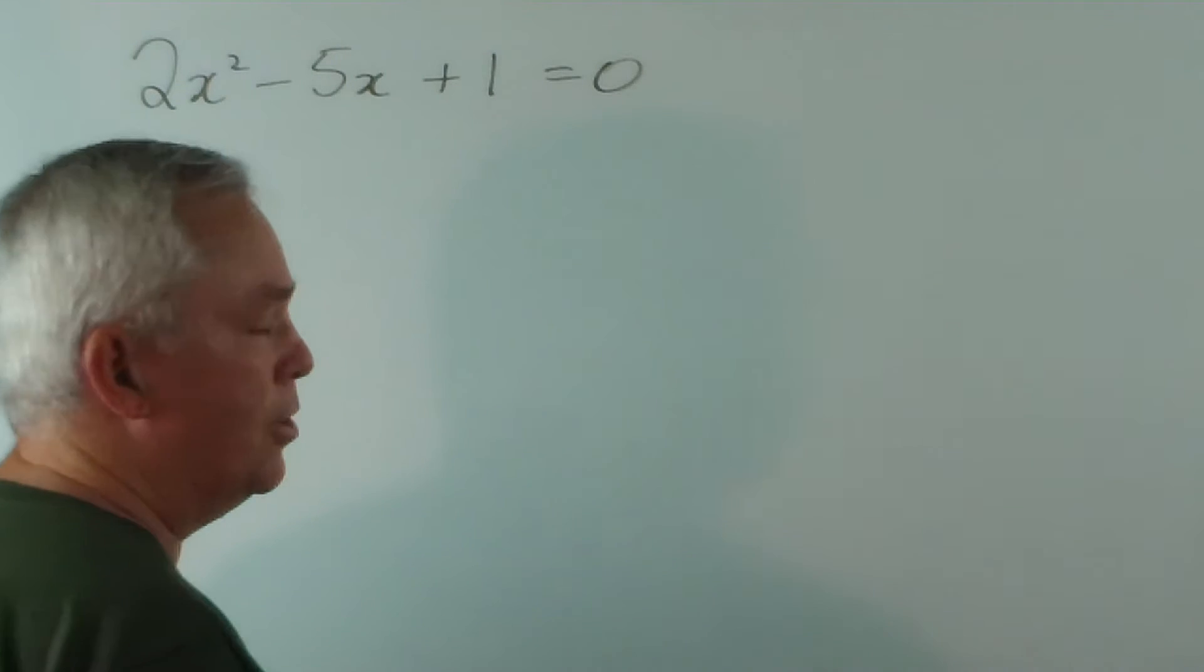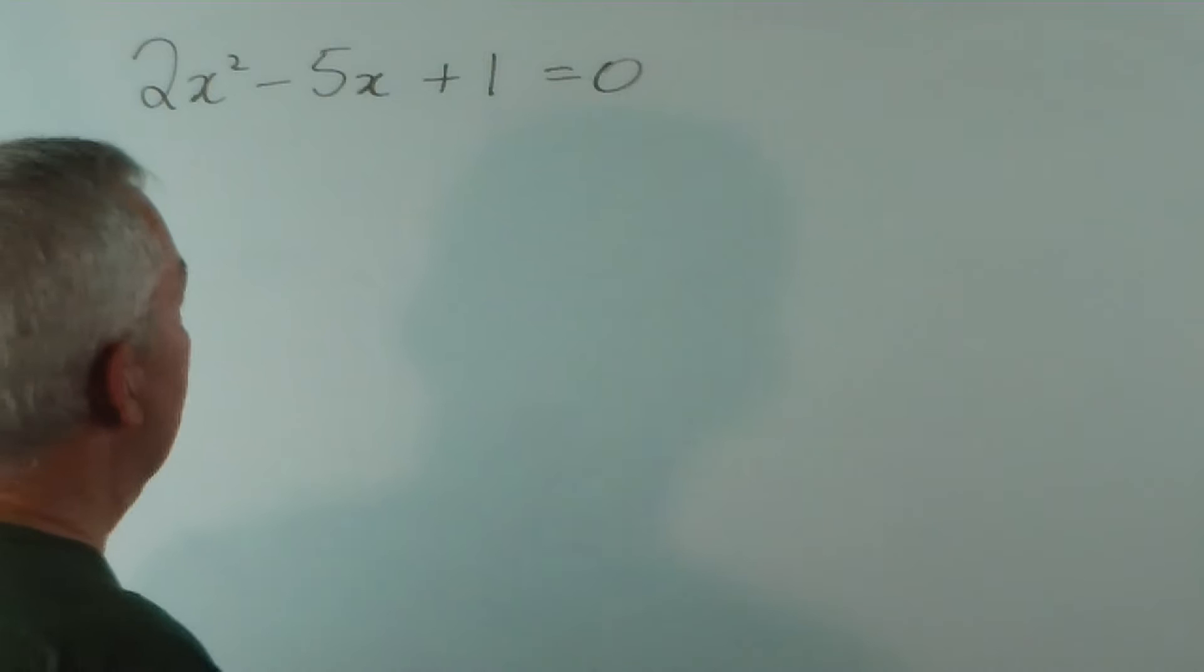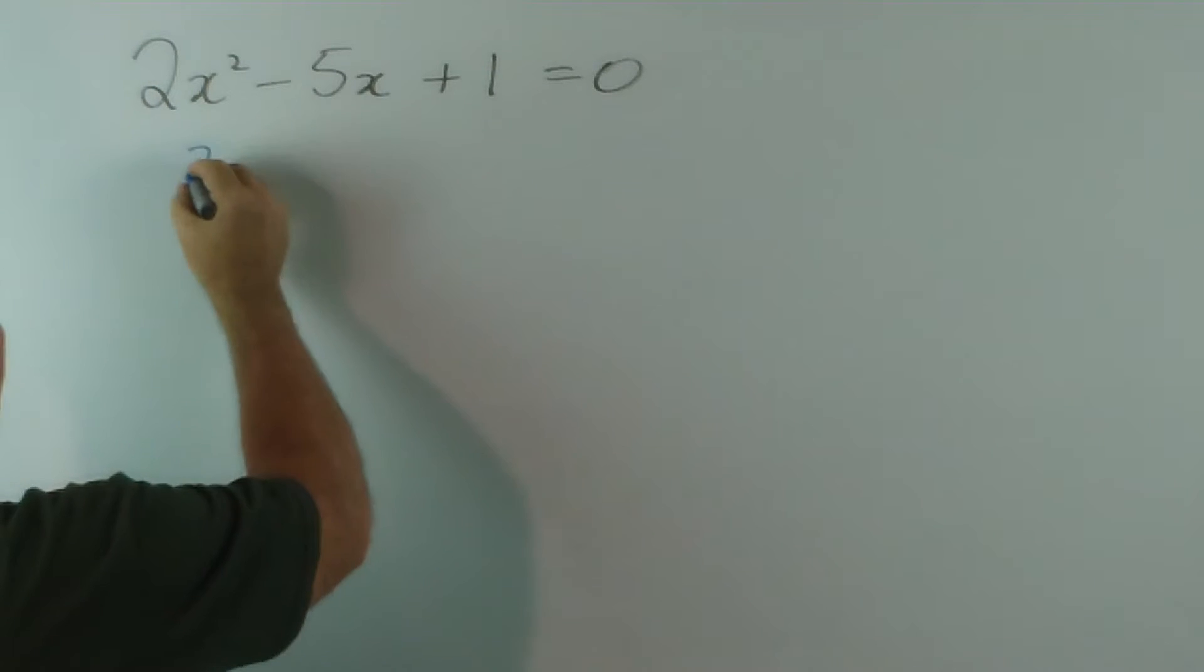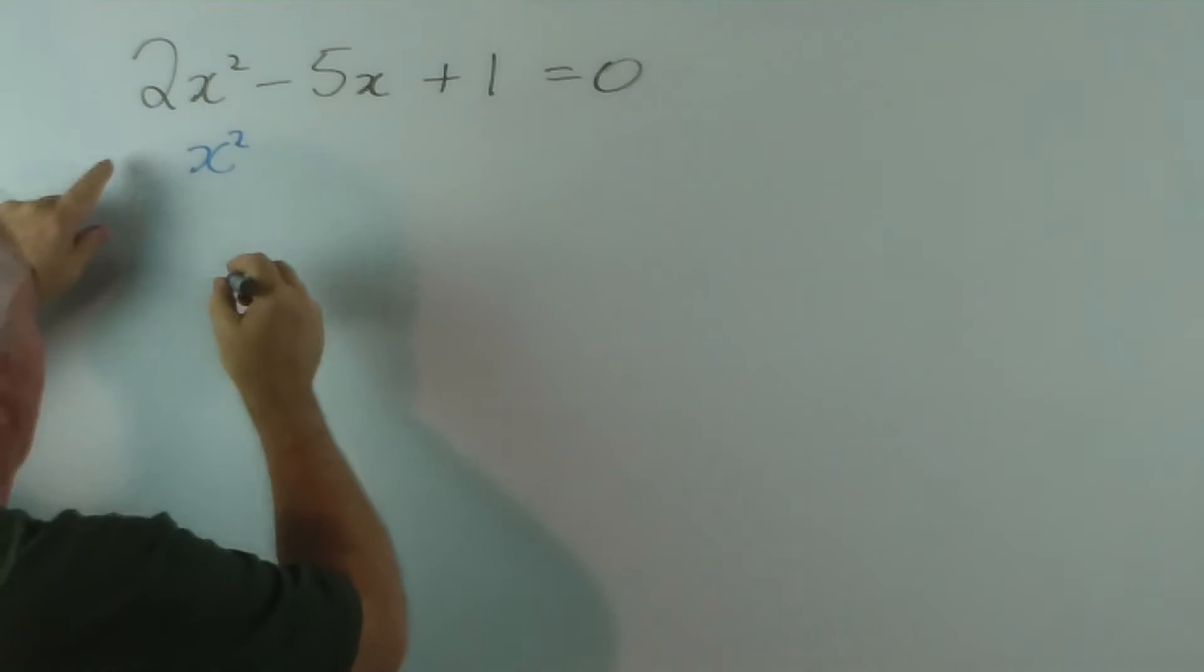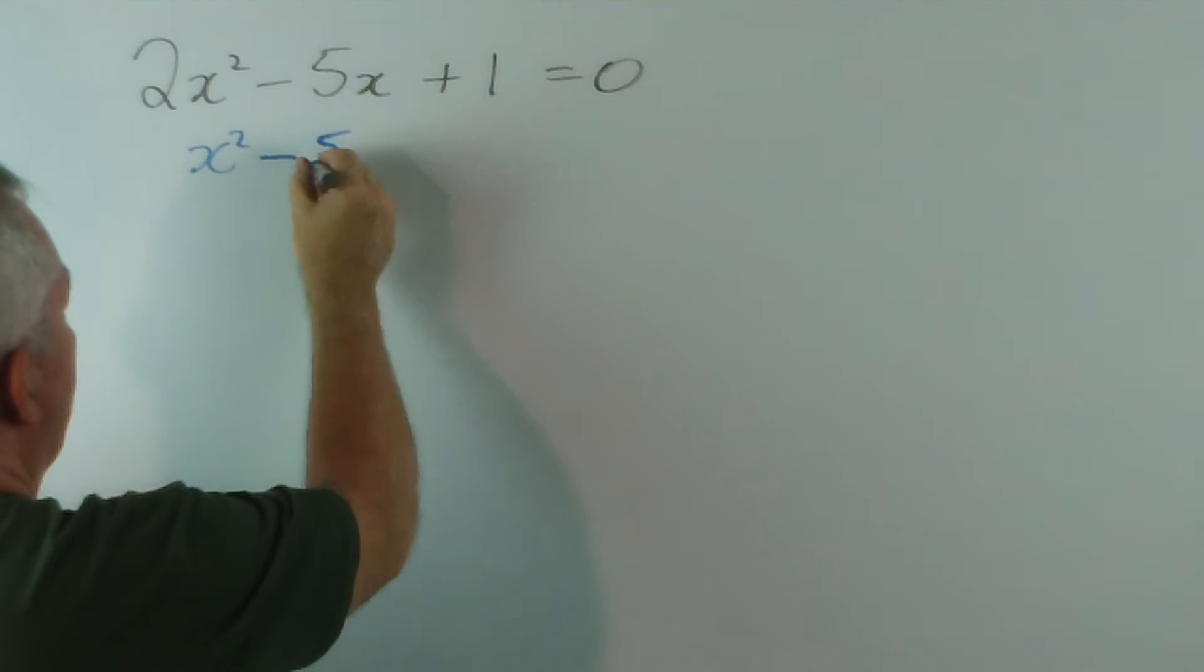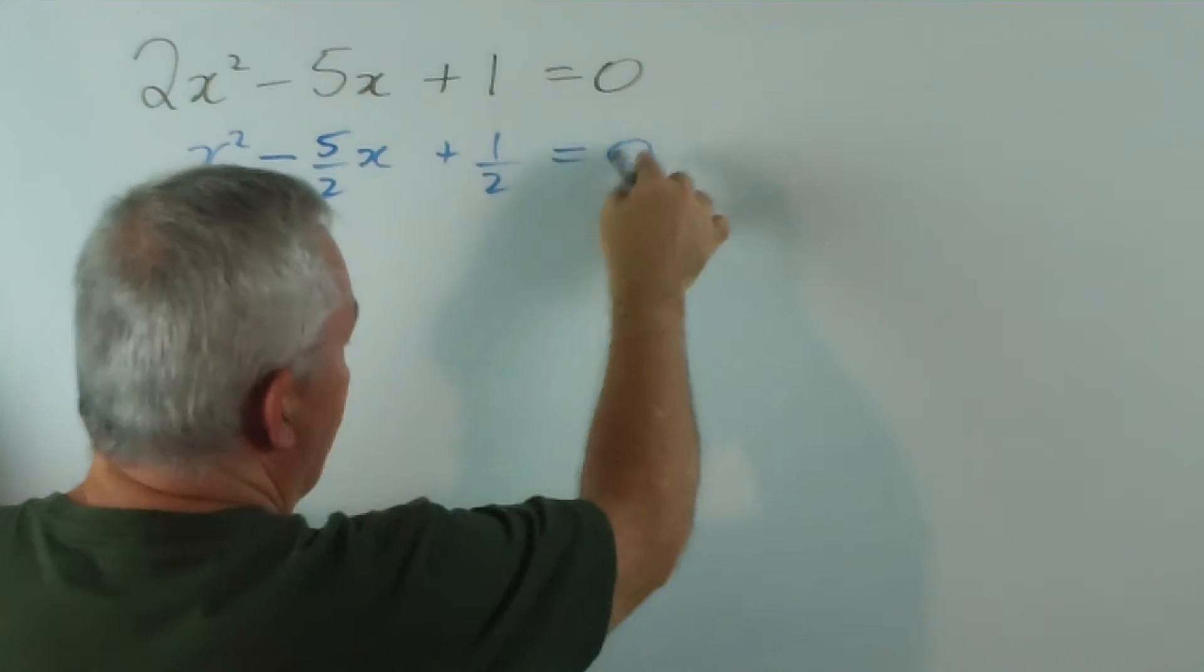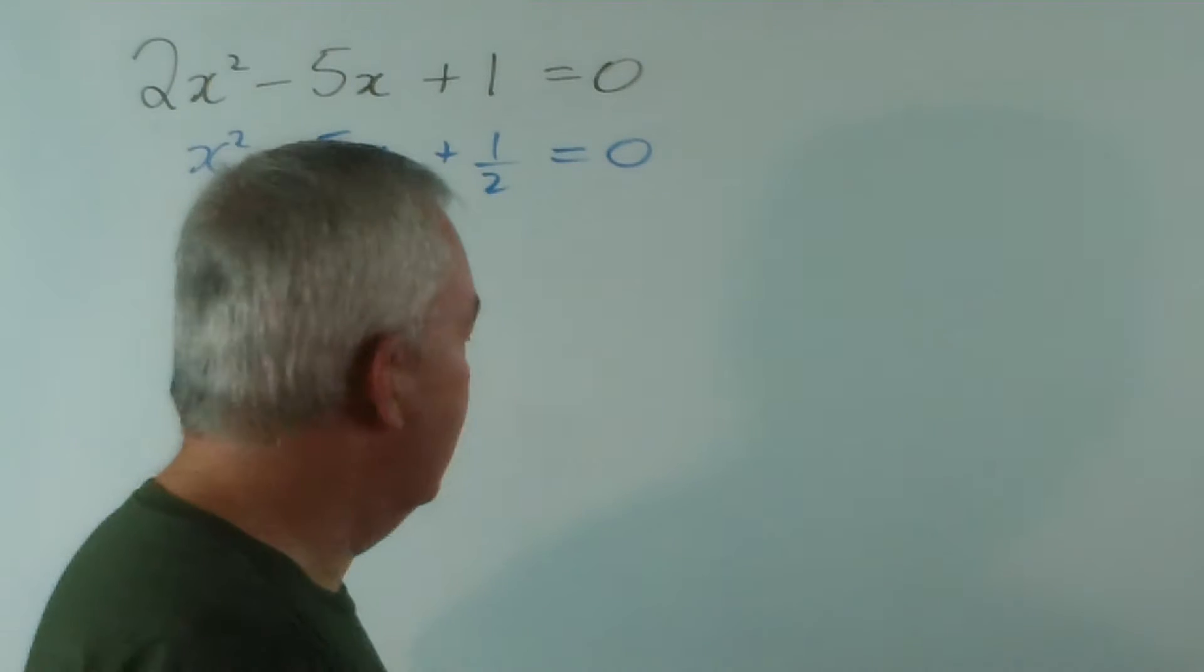And the simple solution is that we divide through by this first. In other words, we convert it to a monic form. Now, dividing everything by 2, we get rid of this and leave this. Notice I'm leaving everything as a fraction, dividing 0 by 2 is still 0.